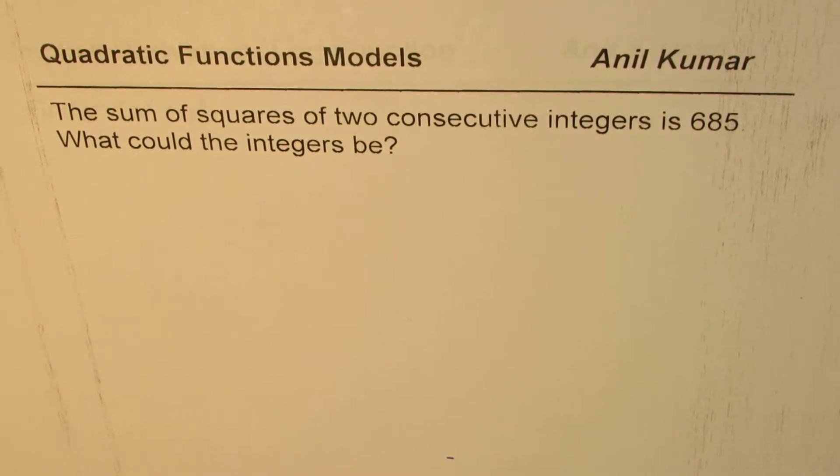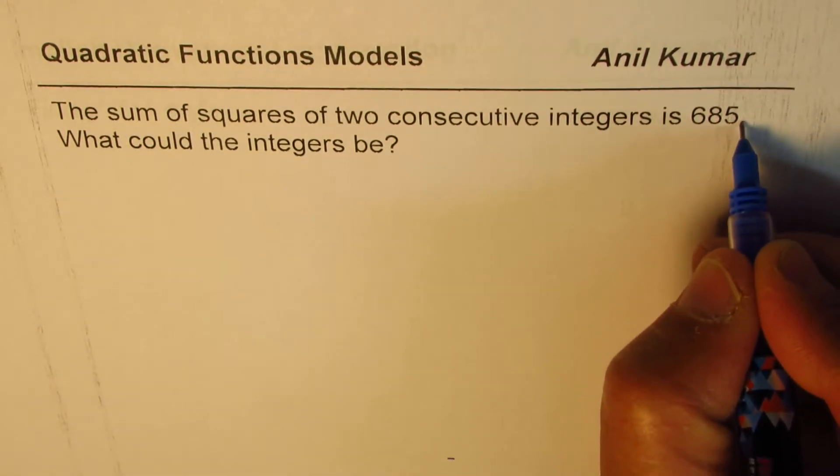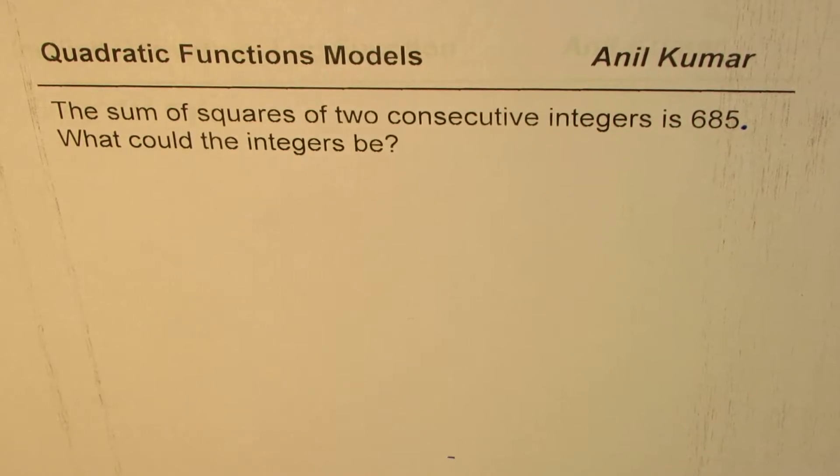I'm Anil Kumar sharing with you a question from my student. The question here is: the sum of squares of two consecutive integers is 685. What could the integers be? Now these are word problems which sometimes are tricky.